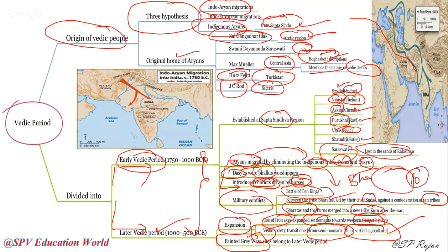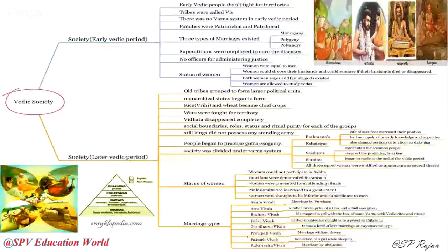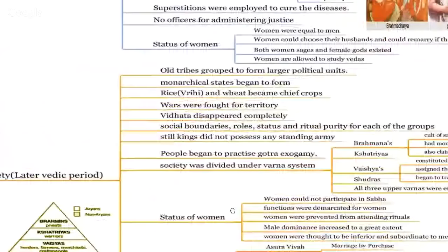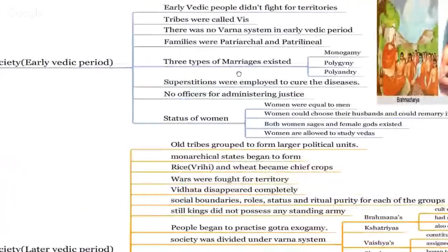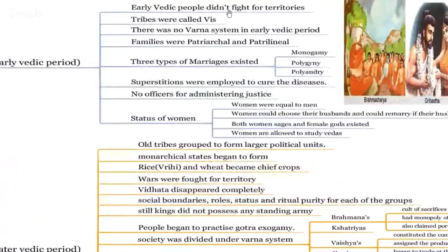During the Later Vedic period, painted grey ware was mostly used for daily use — remember this. Now we see the society during the Early Vedic age: they didn't fight for territories, living an equal lifestyle. The tribes were called Vis. There was no varna system. The Early Vedic age was mostly patriarchal and patrilineal — the father or male was the head.